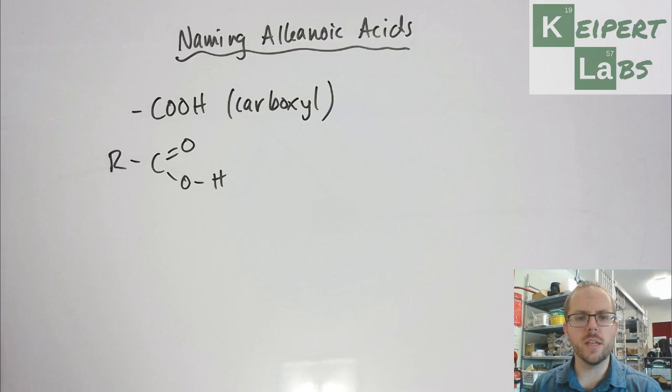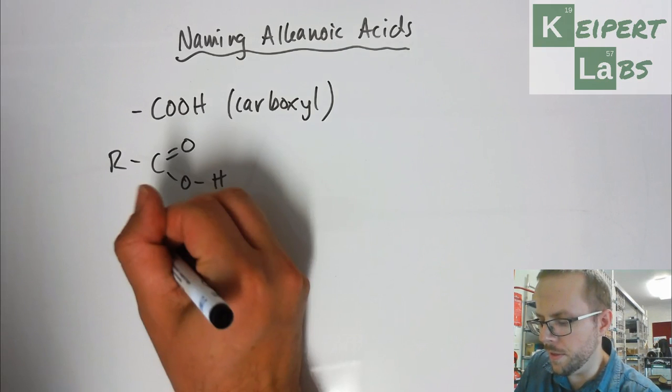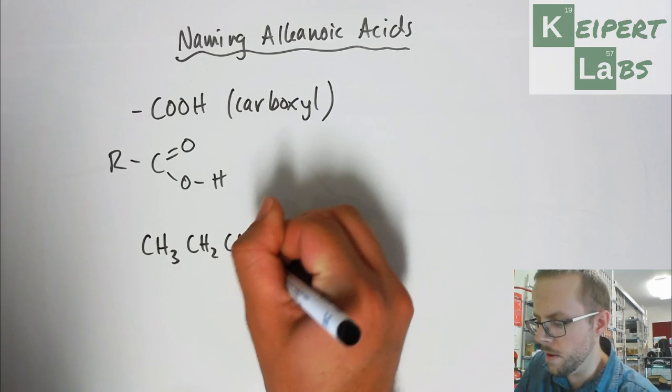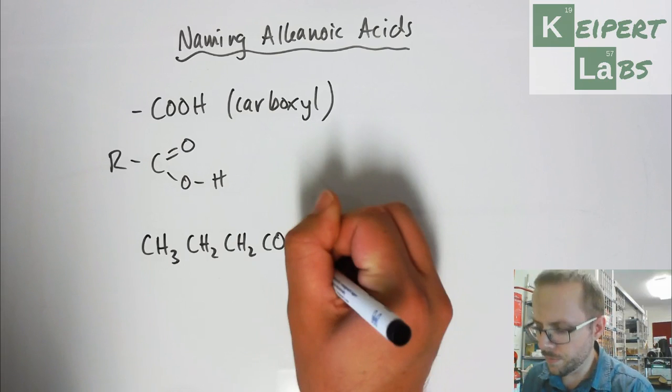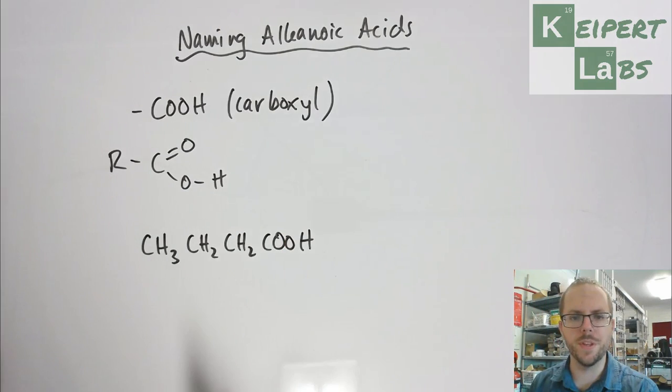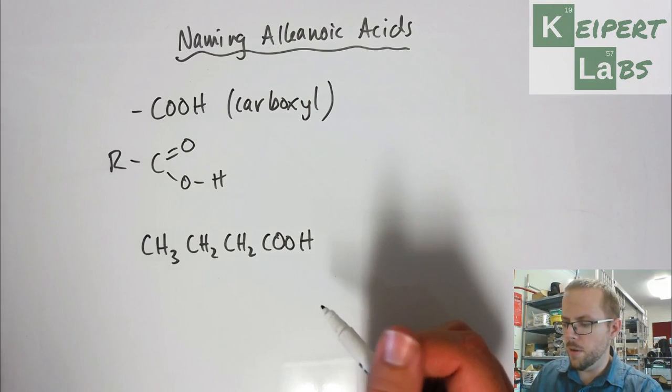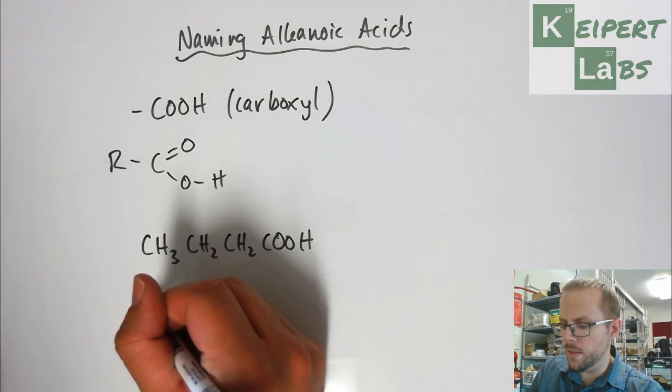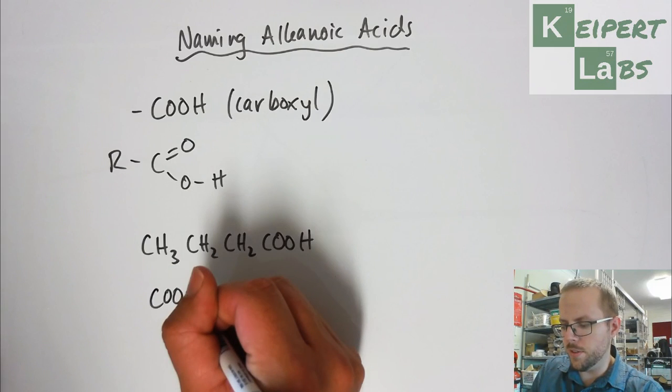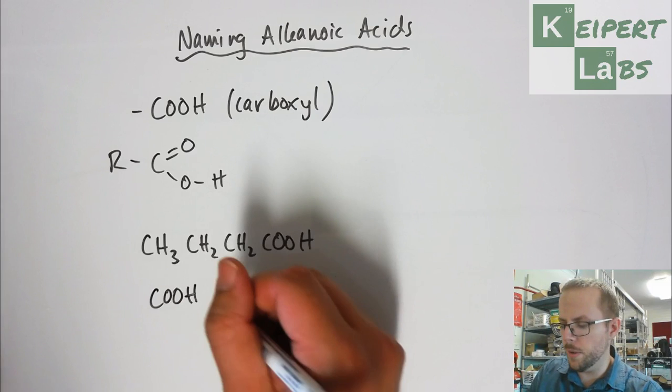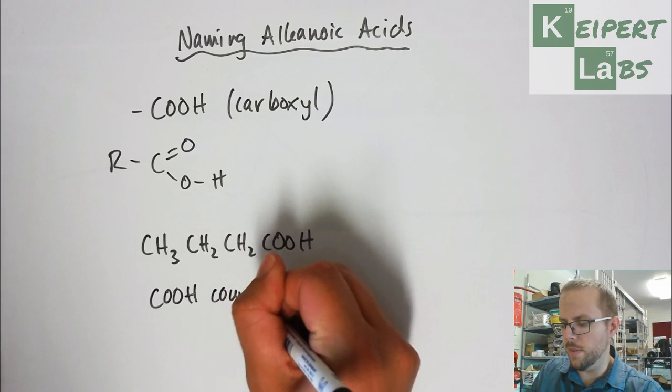Now, what we want to do is learn how we construct the names for these compounds. It's going to be a quick tutorial on how we do that. Let's say I've got this substance here. I want to come up with its name. A couple of things we need to be aware of: when we're looking at this, the COOH group counts in the carbon chain.